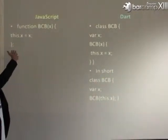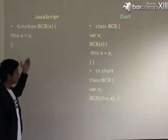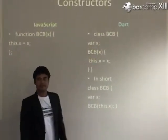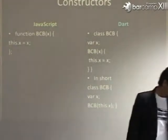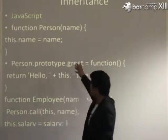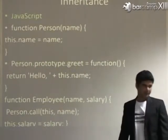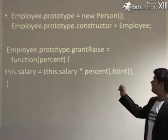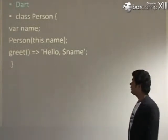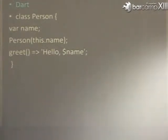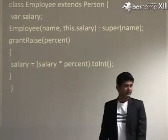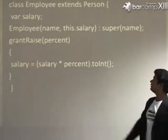For constructors — in JavaScript you can't write constructors as you would in other languages. In Dart, simply with the class name you can define your constructors. For inheritance, lots of code is required in JavaScript to achieve simple inheritance. But in Dart, simply write the class name — for example, 'Person' — and if you want to inherit, use the 'extends' keyword to inherit that class simply.